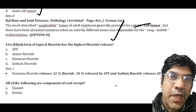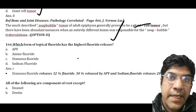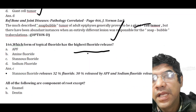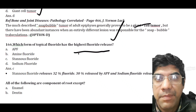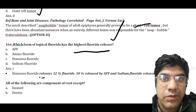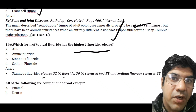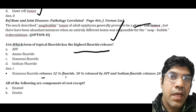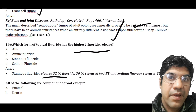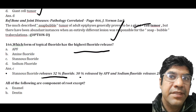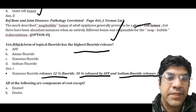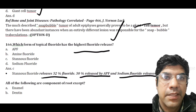Which form of topical fluoride has the highest fluoride release? It is stannous fluoride. Stannous fluoride releases 32% of fluoride, APF releases 30%, and sodium fluoride releases 28%.